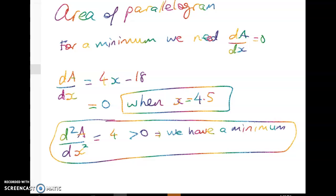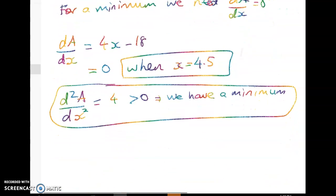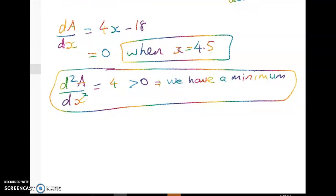Right but we haven't finished the problem because look what we were asked to find. We had to find the smallest possible area and we had to justify that it was a minimum. Okay so we've done the justifying part justifying that it's a minimum. That's one way to do it.